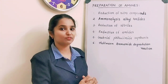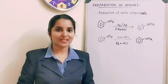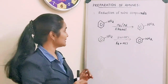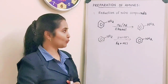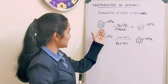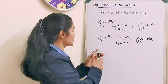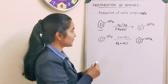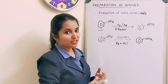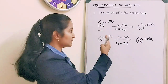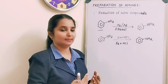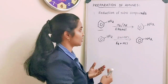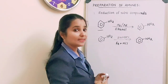These are the specific methods of preparation of amines we are going to discuss in this chapter. So let's see the first method — reduction of nitro compounds. Here we have a nitro compound, and by passing hydrogen gas over finely powdered metals like palladium, platinum, etc., we will get the corresponding amine.